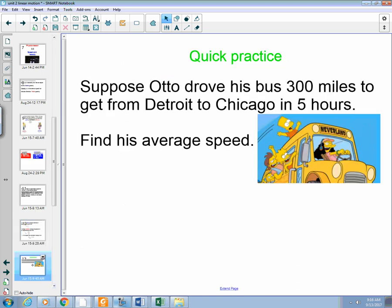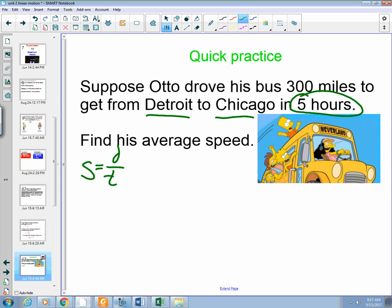So, let's see if we can put this to the test. Suppose we have Otto. He is driving his awesome school bus and he is going from Detroit to Chicago, and he does so in 5 hours. Find his average speed. Okay, no problem. We know that our speed is equal to our distance over time. And since we are doing constant speed and constant velocity, our average speed should just be our speed.